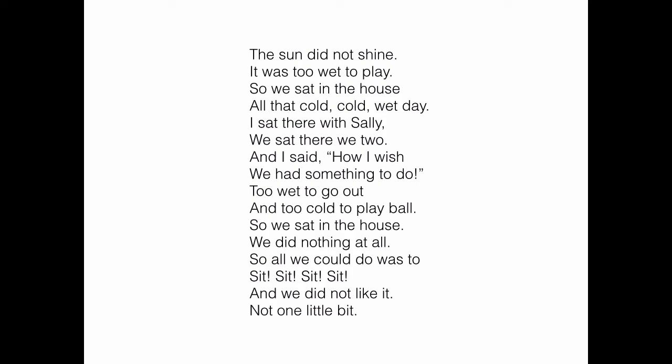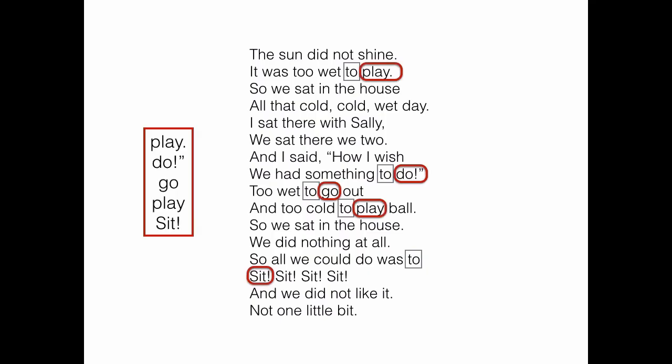Now we're working with a longer text and the current context is the word 'to'. We can look at all the places where the word 'to' occurs, and to find the next context we look at the words that follow it. So all of the words that come after 'to' are: play, do, go, play, and sit. Notice the punctuation is included with the word.